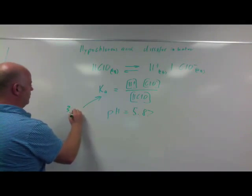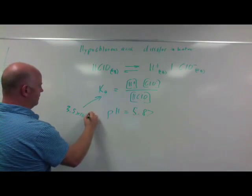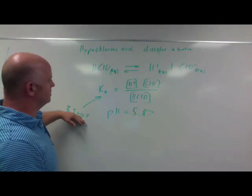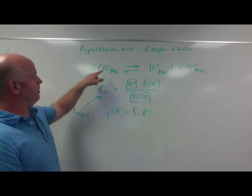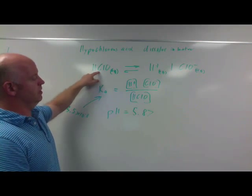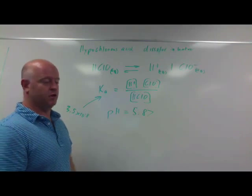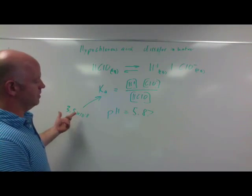So this value is 3.5 times 10 to the negative 8. Very small. Being very small, we would assume this would be very reactant favored, so we're assuming we're going to have mainly this stuff and not a lot of that stuff in here because it's such a small Ka value.